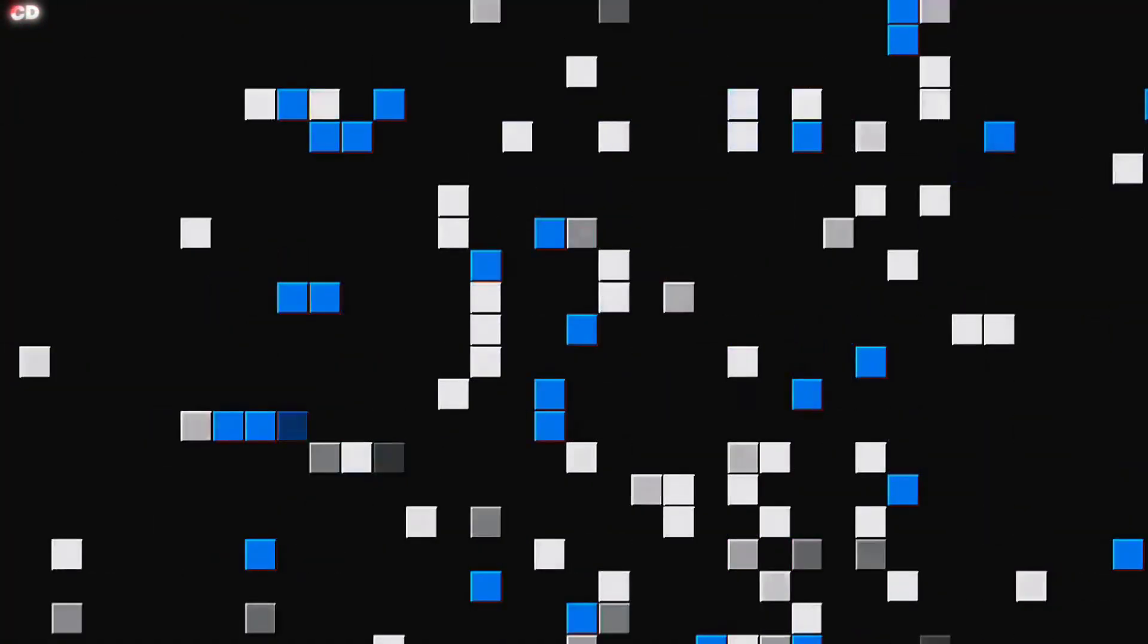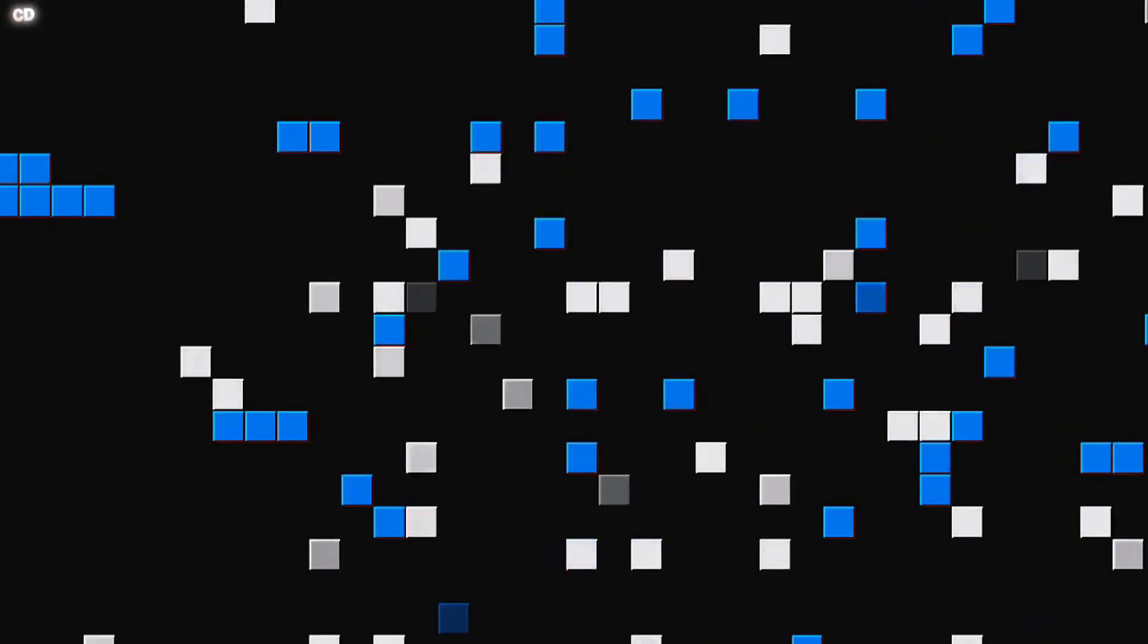In this view, space and time are no longer smooth and continuous, but are instead woven together from tiny, indivisible chunks, much like the pixels in a digital image.